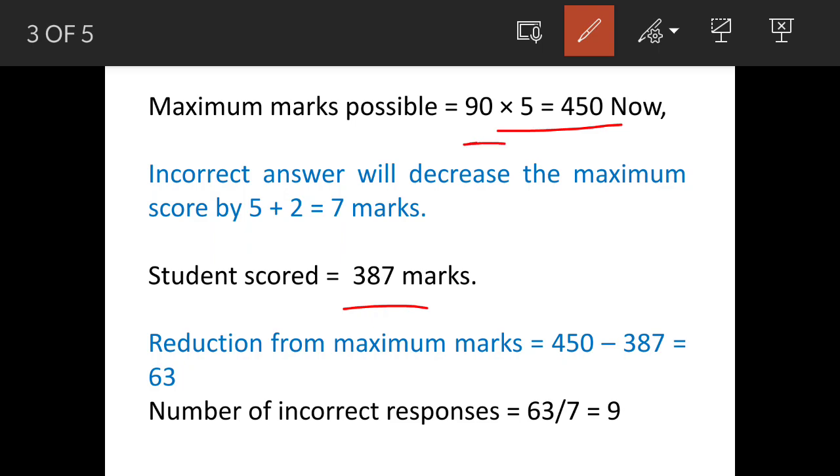90 into 5 equals 450. Now, every incorrect answer will actually decrease the maximum marks by 7. How? He will lose 5 marks for the question and 2 marks for negative marking, total 7.